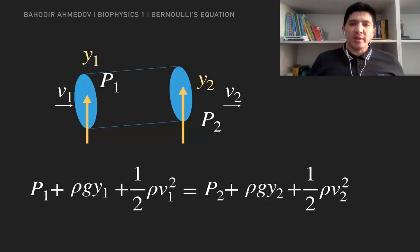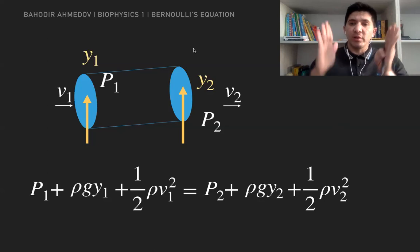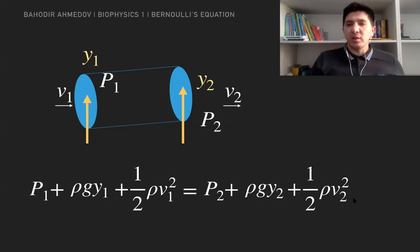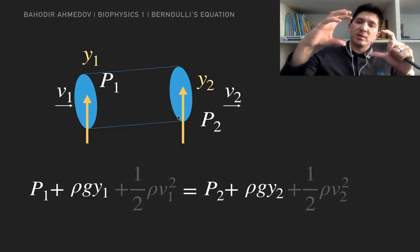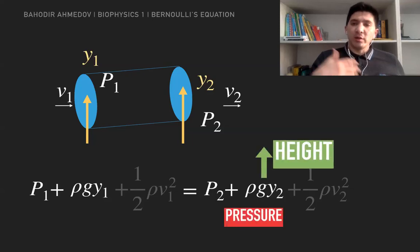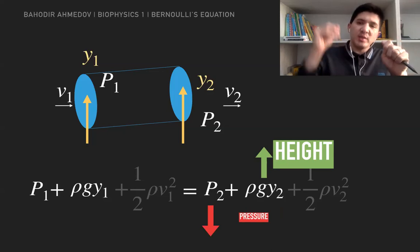Now let's look at the same Bernoulli equation to understand what is the connection between height and pressure. I'm going to look at a tube where the cross-sectional area in the beginning and at the end are the same. Since the cross-sectional areas are the same, the velocity of the fluid is going to be the same — so the kinetic energy terms cancel. Since I changed the tube so that the height at the end is higher, y2 is larger. According to conservation of total energy — Bernoulli's equation — then the pressure is going to decrease. So if I increase the height, then the pressure is decreased, and vice versa.